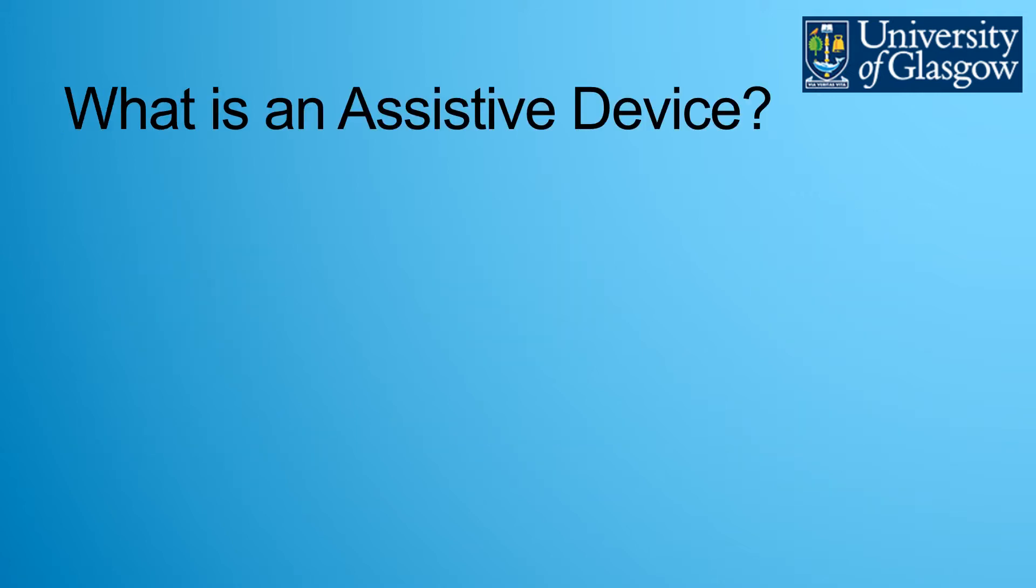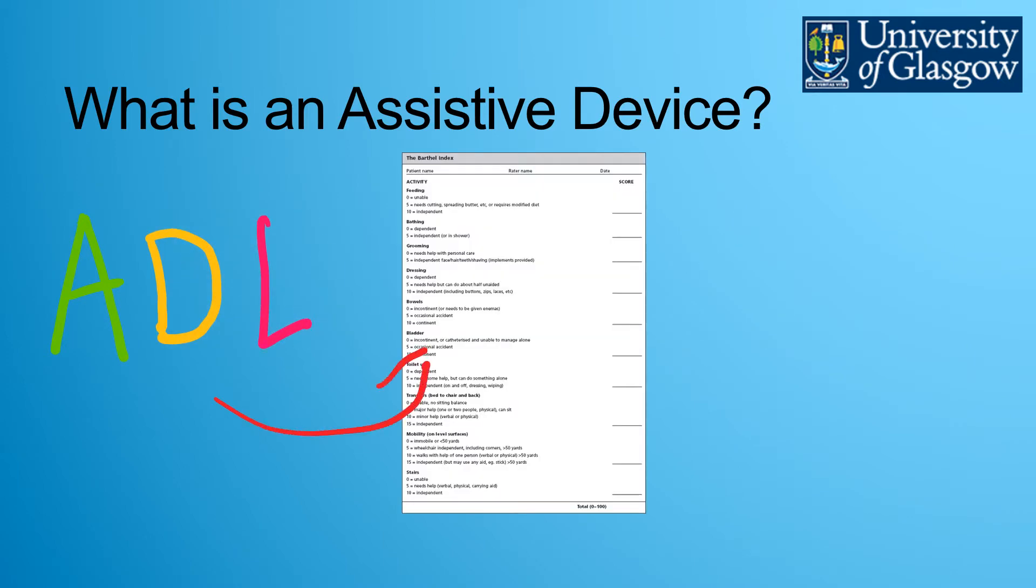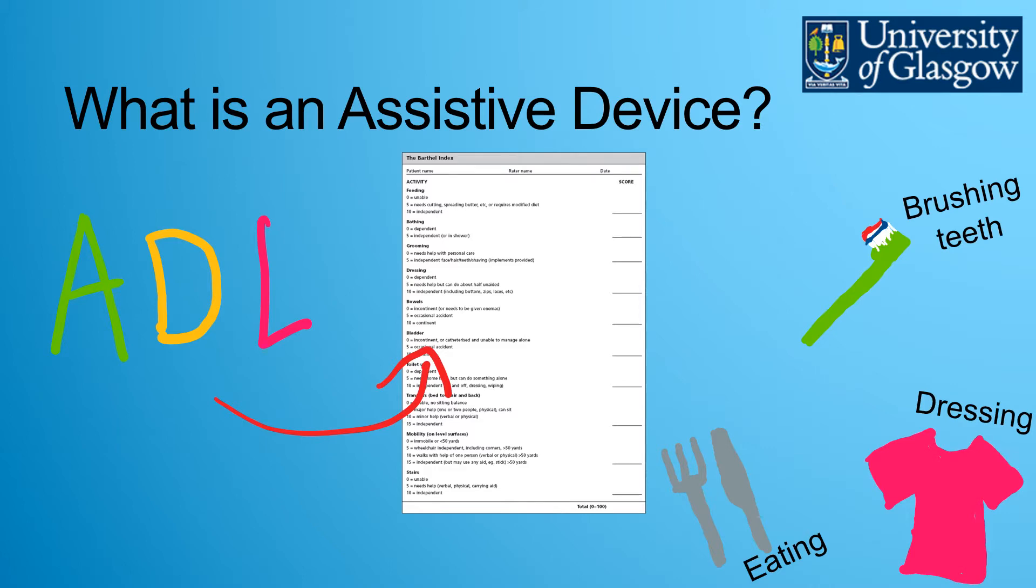So I'd like to start off by mentioning what exactly is an assisted device. You may have heard of Activities for Daily Living or ADLs. It's a point score system that refers to people's ability to perform everyday self-care activities such as brushing your teeth as an example.